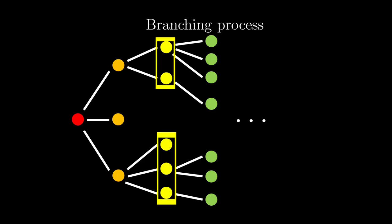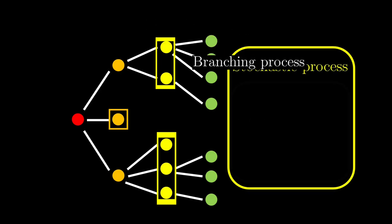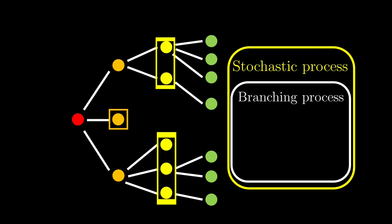Because this branching out is random, as it can have two branches, three branches, or even not branching out at all, we say this is a kind of stochastic process, stochastic being a fancier name for random.